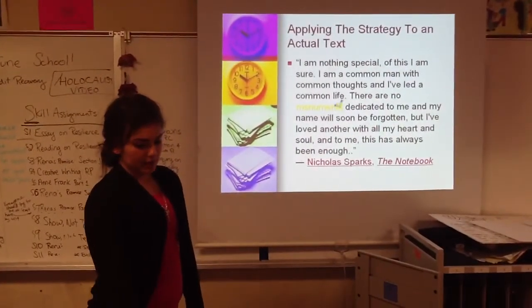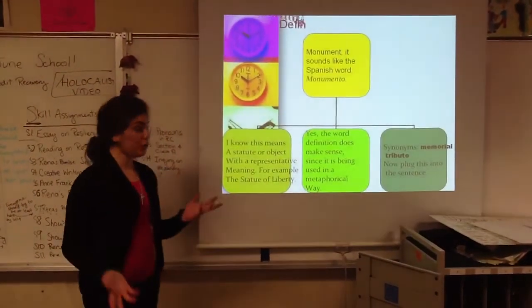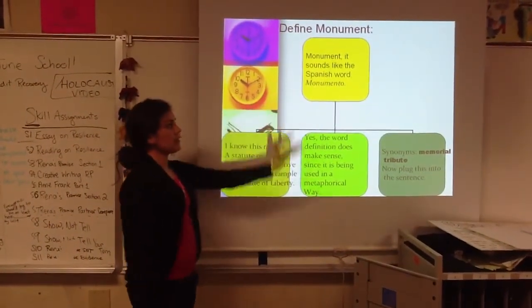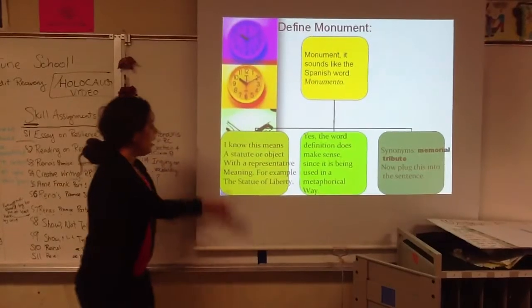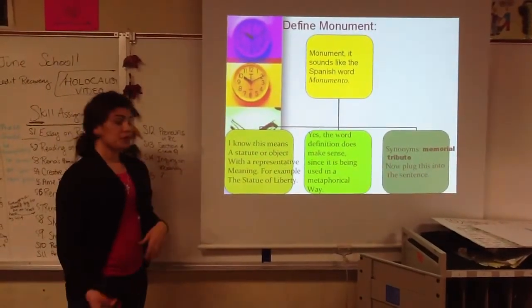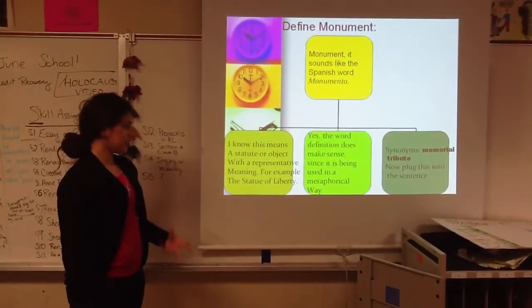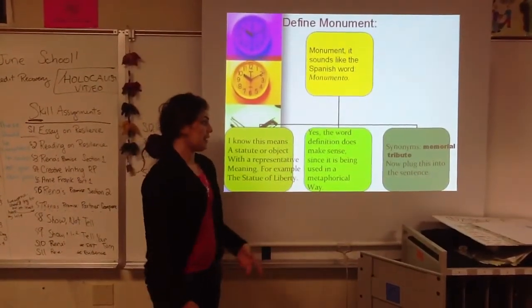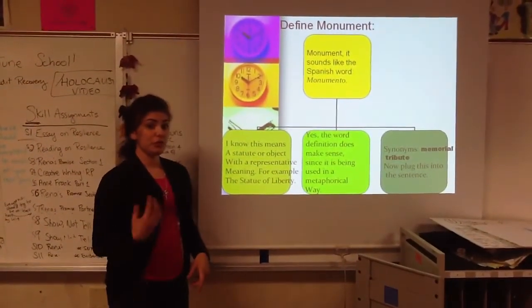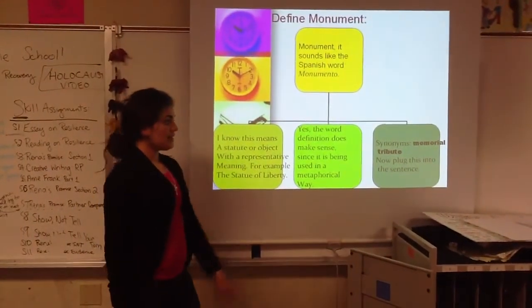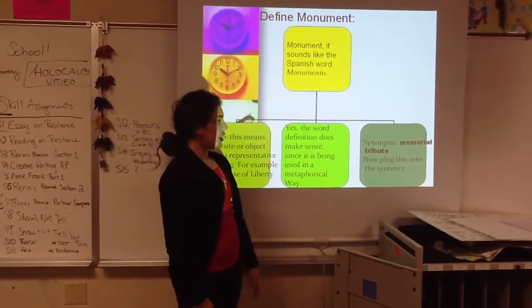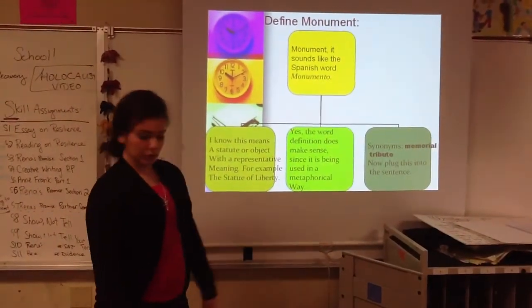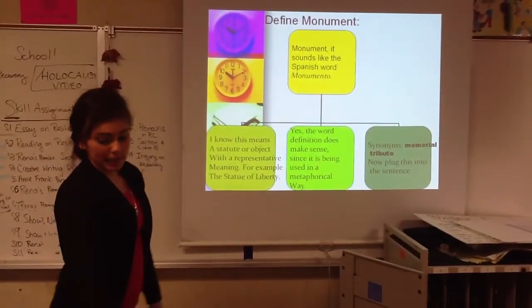The word I highlighted is 'monuments.' I don't know this word, so to define it, I use the fact that 'monument' sounds like the Spanish word 'monumento.' I know that word means a statue or object with a representative meaning — for example, the Statue of Liberty. Since the word definition makes sense, and since it's being used metaphorically, I move on to my last step: find a synonym. The synonym I find is 'memorial tribute,' and I'll plug that in to see if it still makes sense.